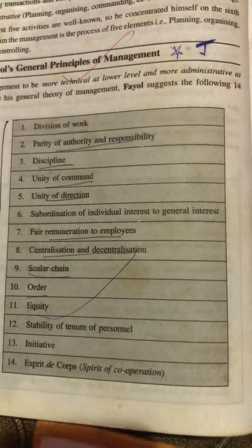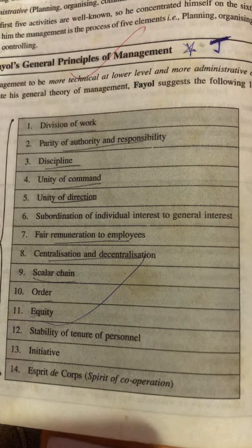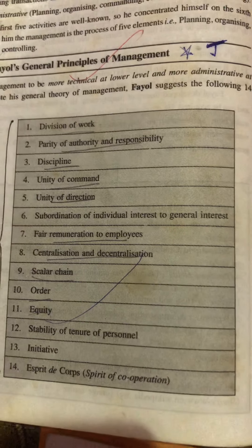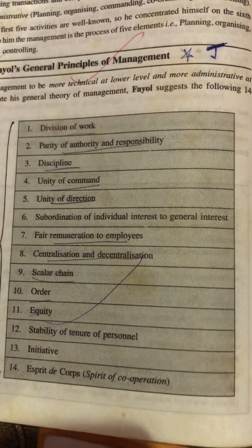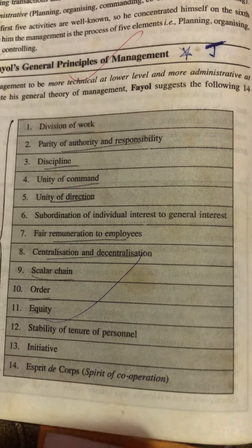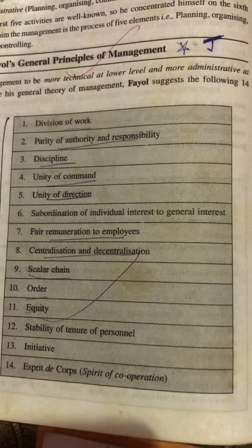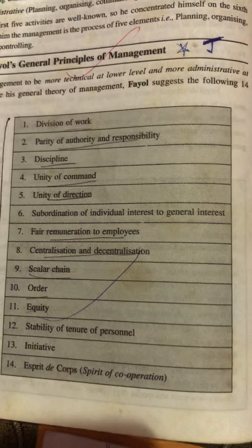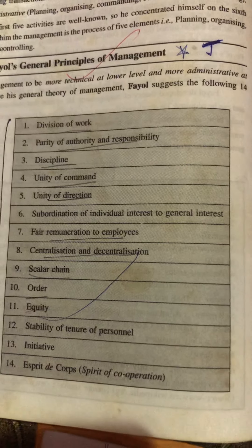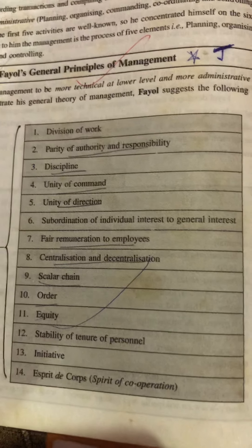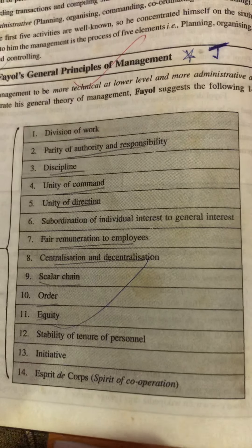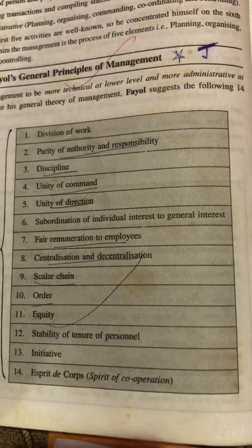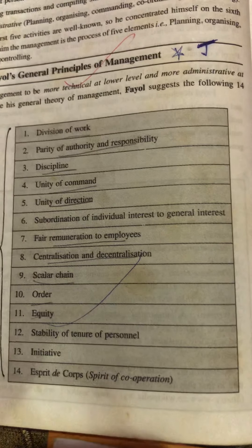The next point is centralization and decentralization. In centralization, authority is concentrated in few hands. In decentralization, authority is distributed to all levels of management. Fayol said that there should be a balance between centralization and decentralization, ensuring effective use of both.